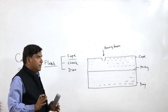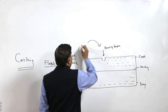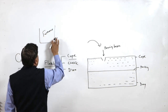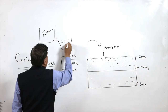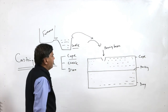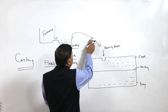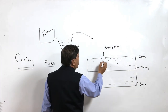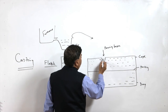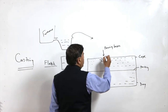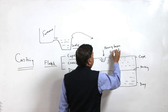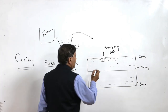The ladle is used to transport molten metal tapped from the furnace to the mould. The molten metal from the ladle is poured into the pouring basin. The pouring basin is designed in such a way that it filters impurities — oxides, slag, dross, and so on are filtered out.